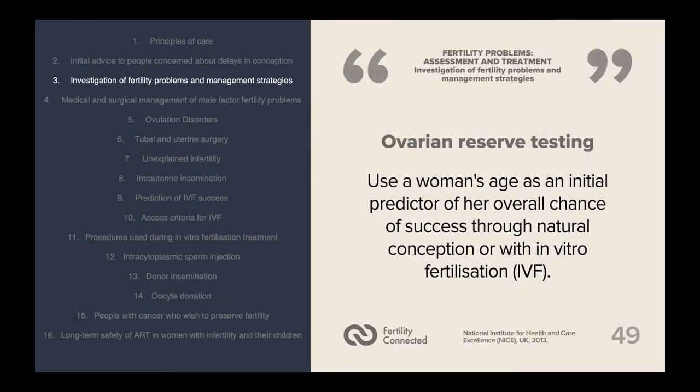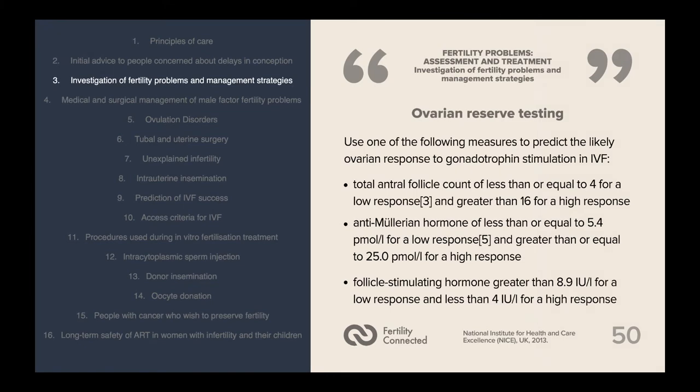Ovarian reserve testing is a routine procedure to test women's fertility. Use a woman's age as an initial predictor of her overall chance of success through natural conception or IVF. To predict likely ovarian response to gonadotrophin stimulation in IVF, use one of the following measures: total antral follicle count of ≤4 for a low response and >16 for a high response; anti-Müllerian hormone ≤5.4 picomoles per litre for low and ≥25 picomoles per litre for high response.